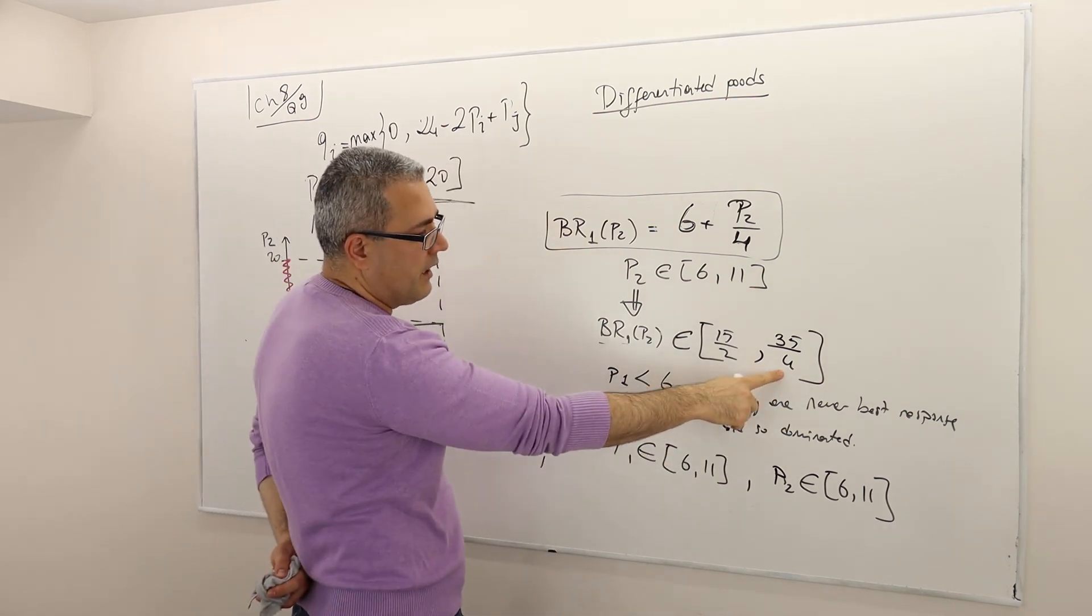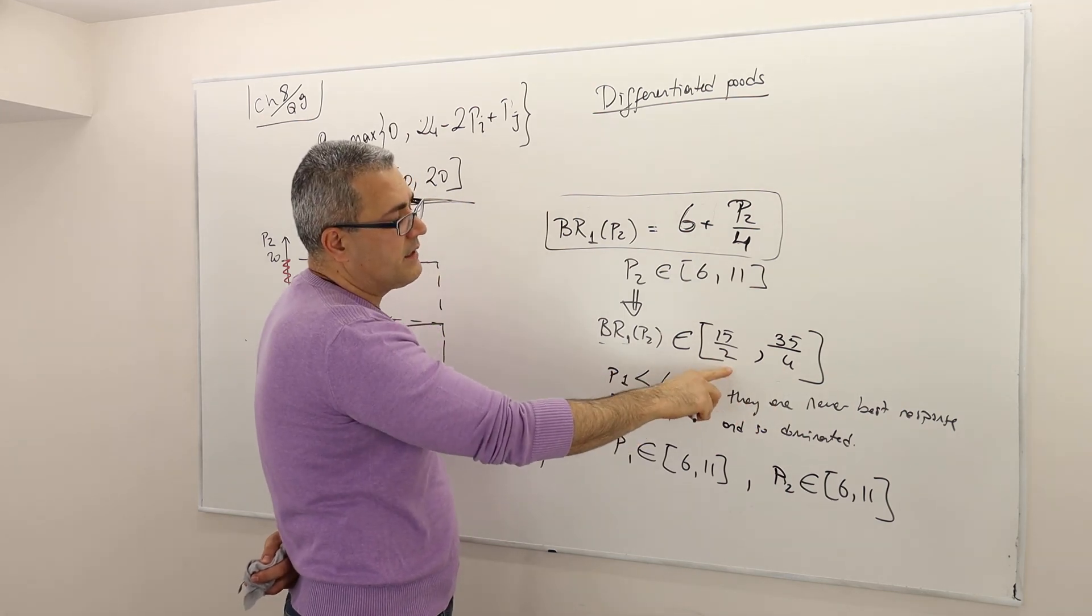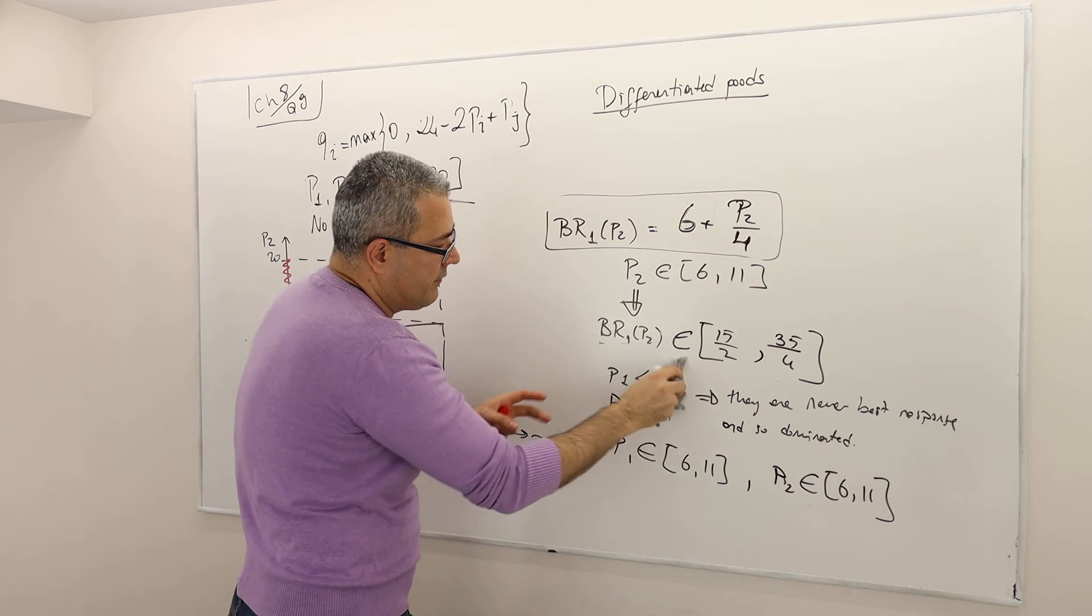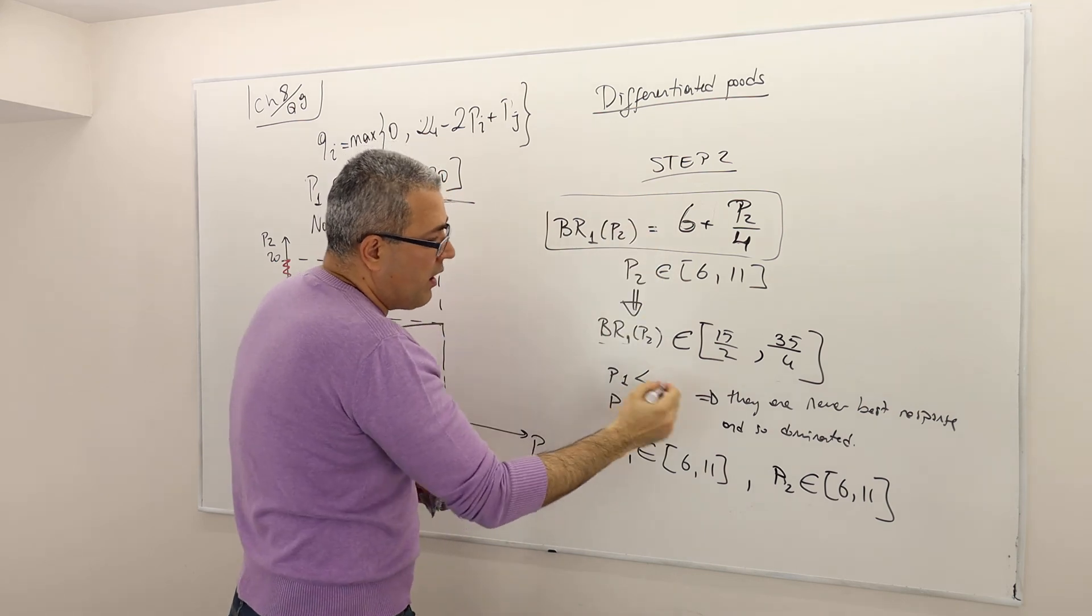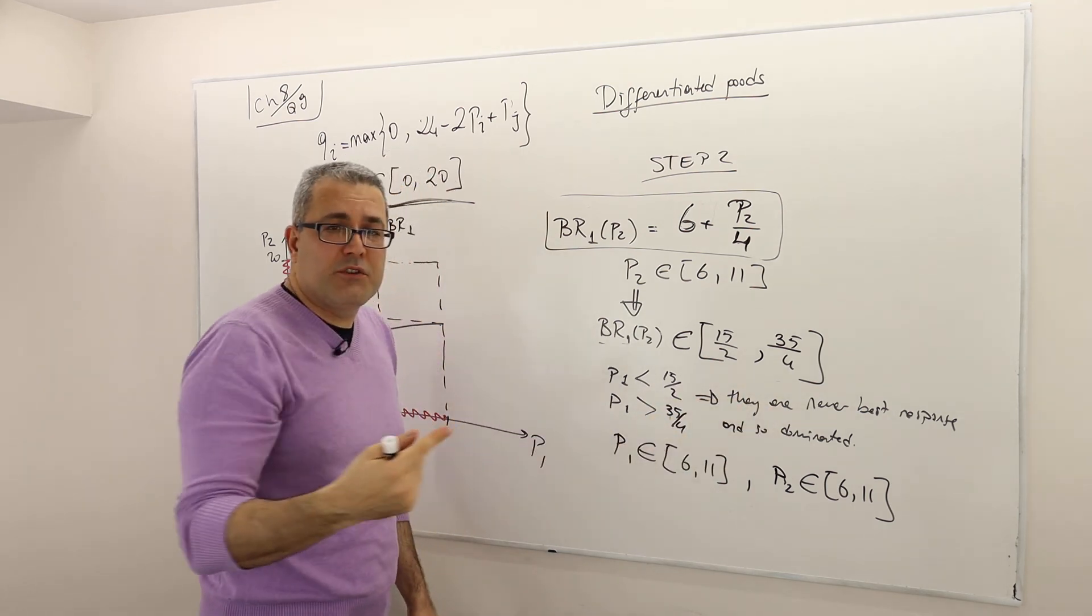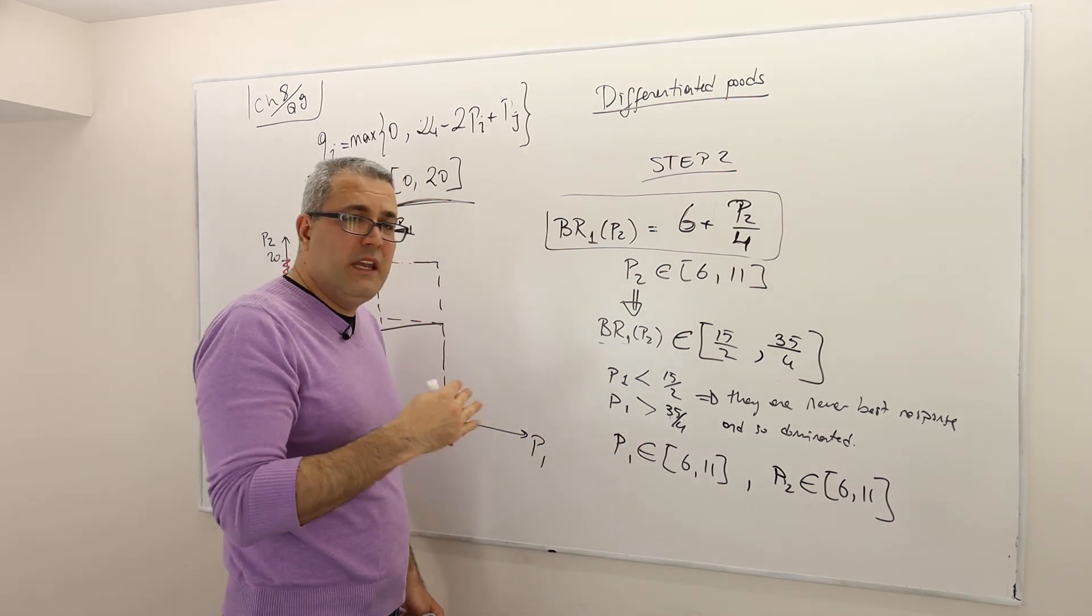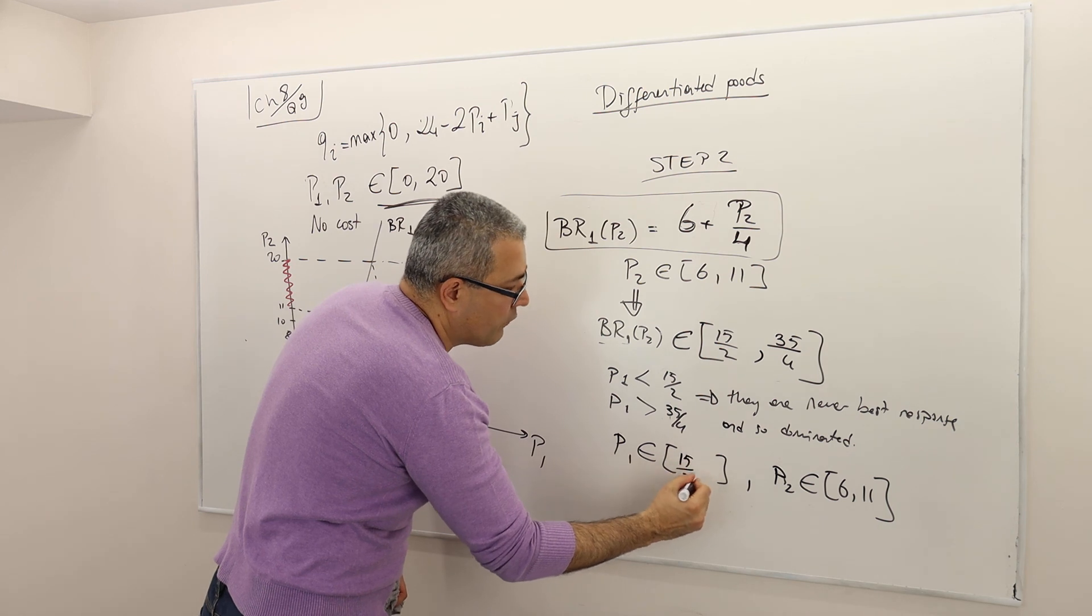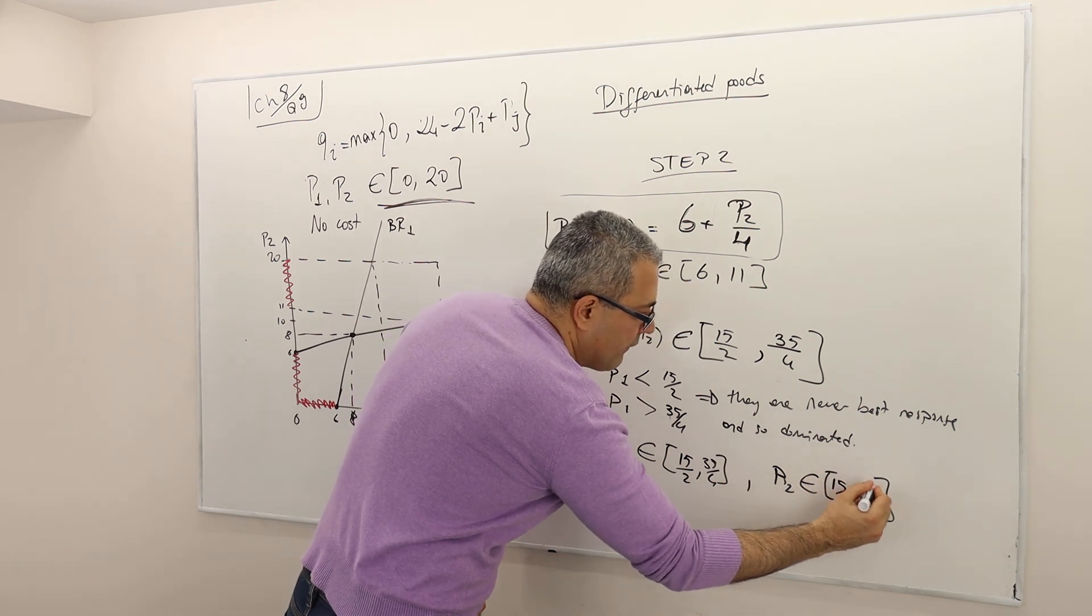I don't know what that equals to, but this is something like slightly less than 9. This is 7.5. So therefore, once again, p1 less than, this is step 2. So p1 less than 15 over 2, and p1 greater than 35 over 4, they are never best response after the first iteration. And so that means they are also dominated, meaning a rational firm 1 will never pick a price outside of this range. 15 over 2, 35 over 4, and same here, because of the symmetric arguments. 15 over 2, 35 over 4, etc.